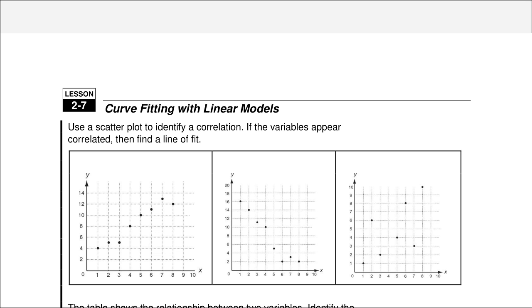In this first square, if we draw a line, we can see that there is a correlation. All of the points are close to the line, and it goes up. It has a positive slope, and therefore it has a positive correlation.